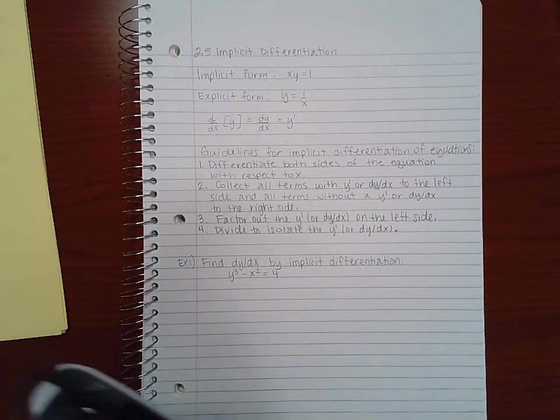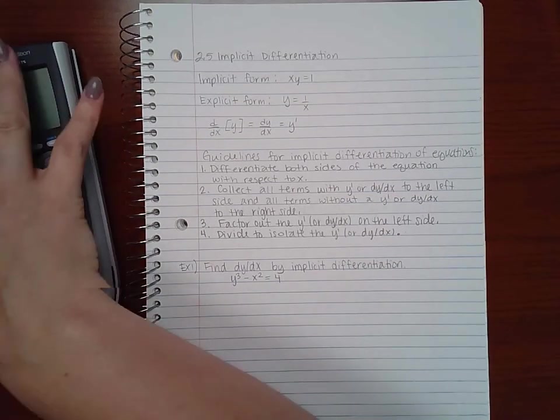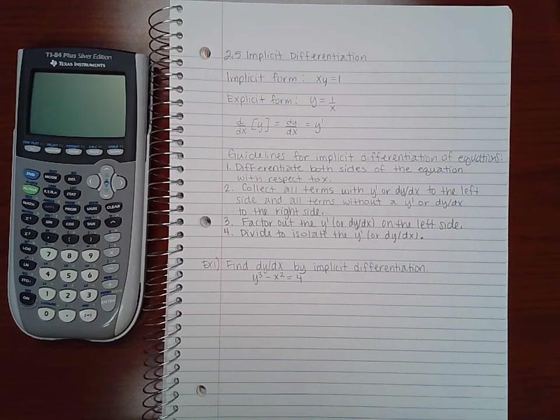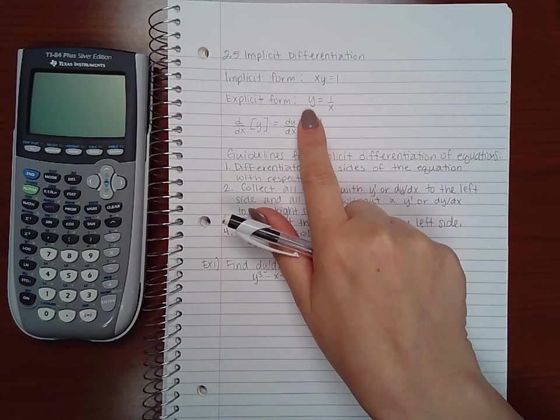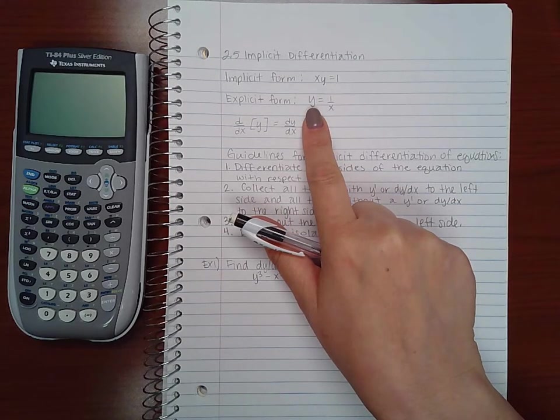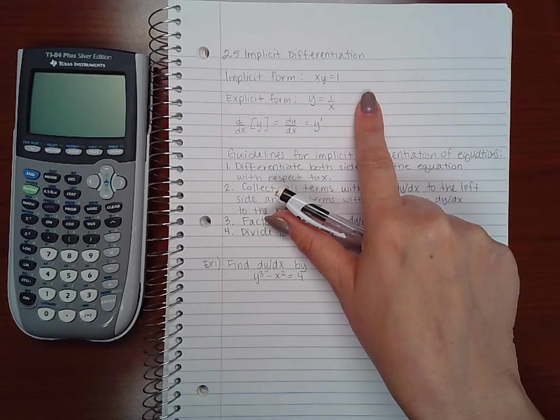This is section 2.5 implicit differentiation, and here we're going to get into some more complicated differentiation. Normally when you have your equations, we're given them in explicit form, which means the y is already solved by itself, so it's always y equals some function of x.